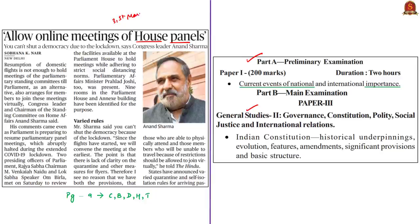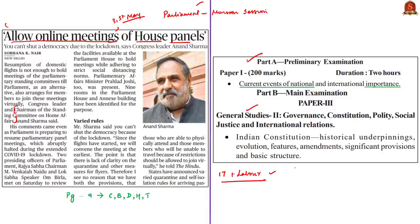The resumption of flights has also raised the prospect of the parliament holding the monsoon session as per schedule by the third week of July. The government is taking all measures to resume the parliament. Meanwhile, the chairman of the standing committee on home affairs has demanded virtual meetings for members of the parliamentary standing committees. Earlier, the chairman of the standing committee on information technology and the chairman of the standing committee on labor had sought meetings through video conference, but both Lok Sabha and Rajya Sabha secretariats have rejected the demand.